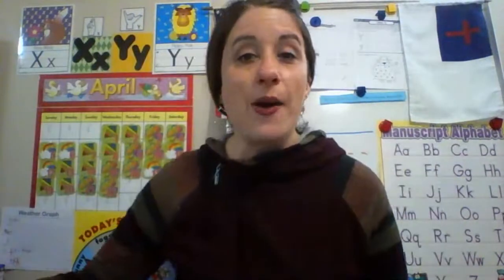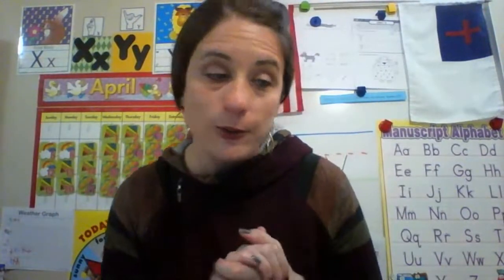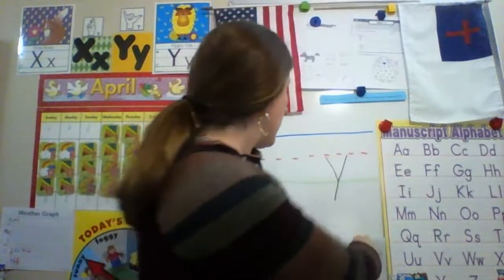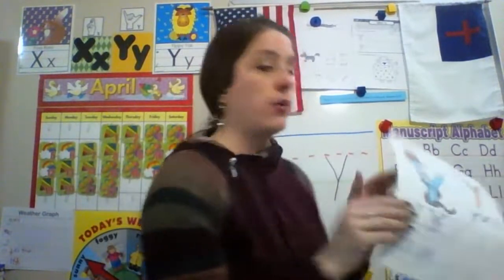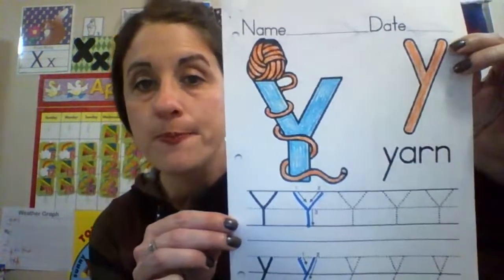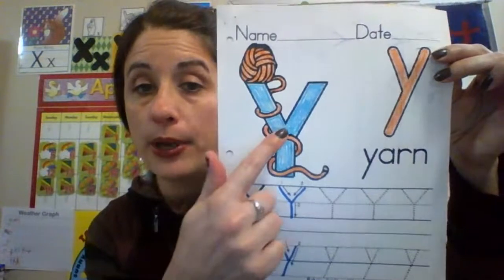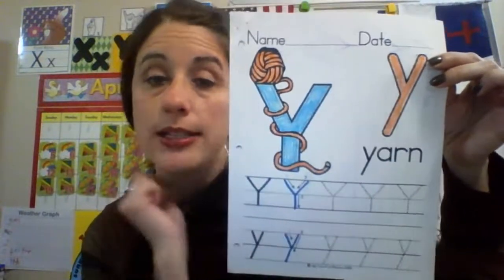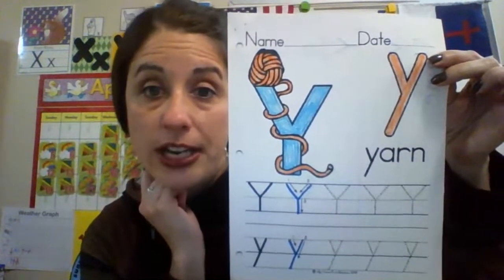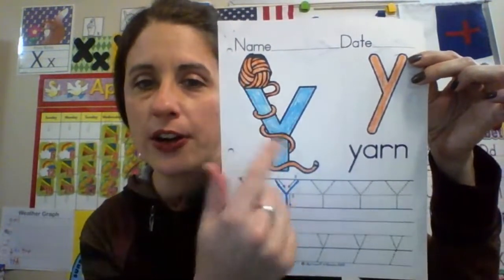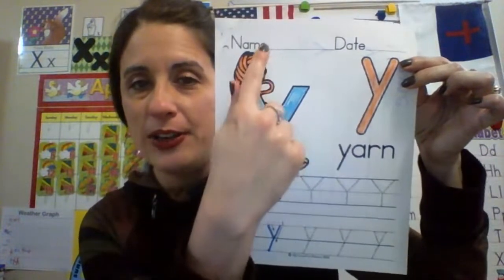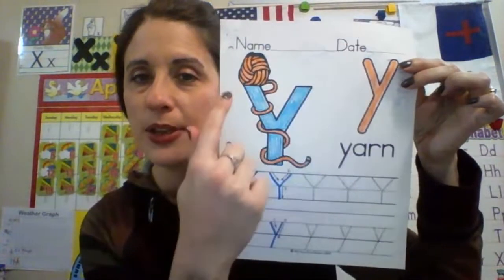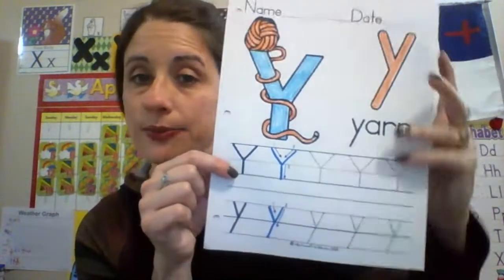Now get your alphabet book out. I have my worksheet here about the letter Y — I did uppercase and lowercase and colored them very nicely. There's yarn wrapped around the Y. You need to write your name, color, and get a pencil.